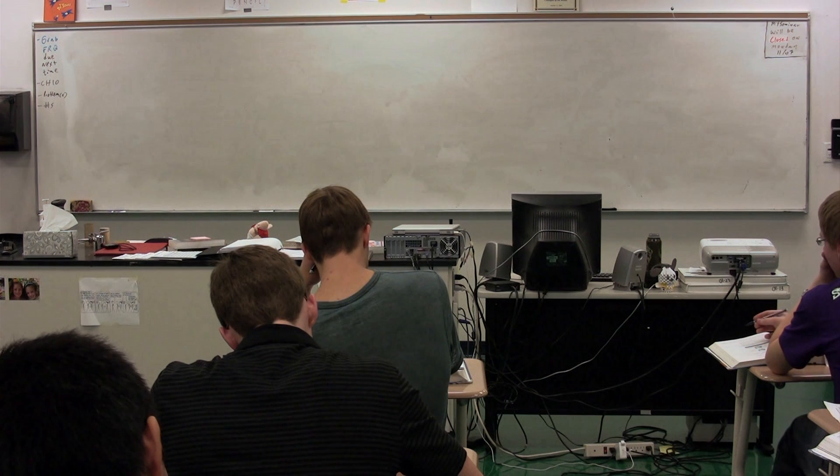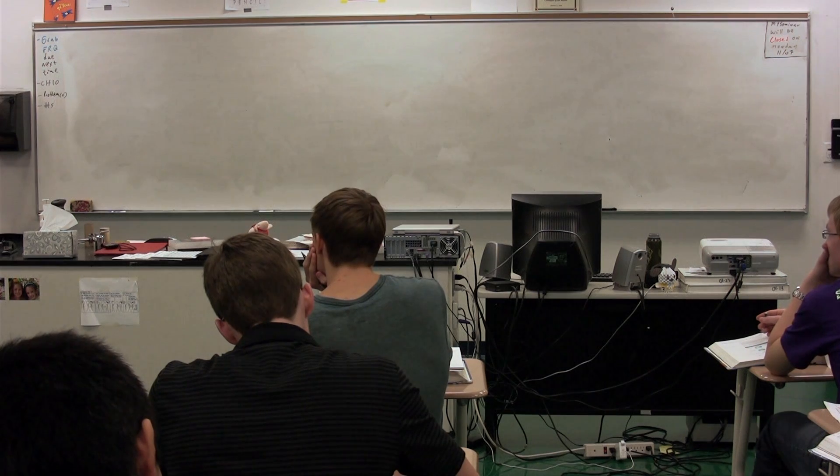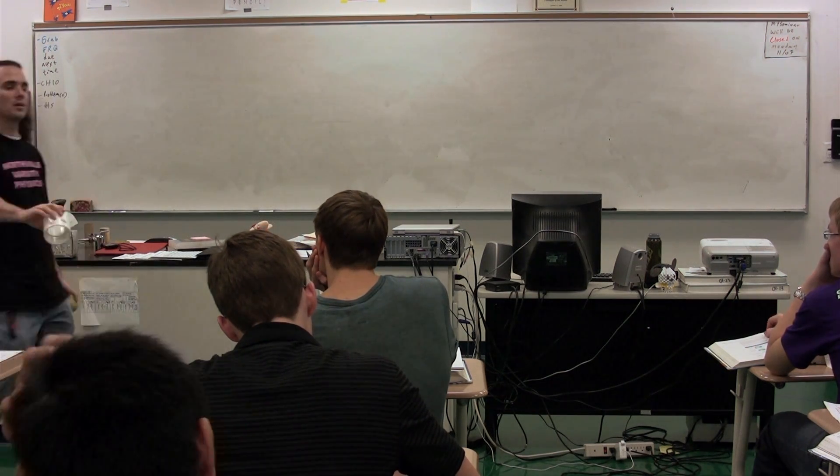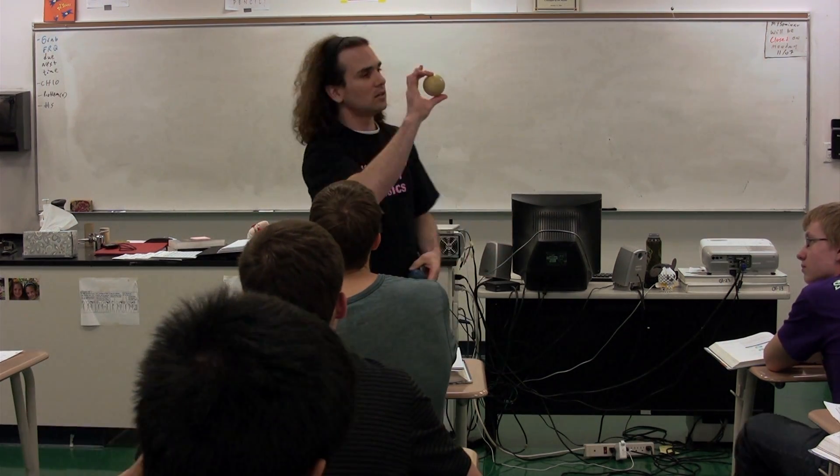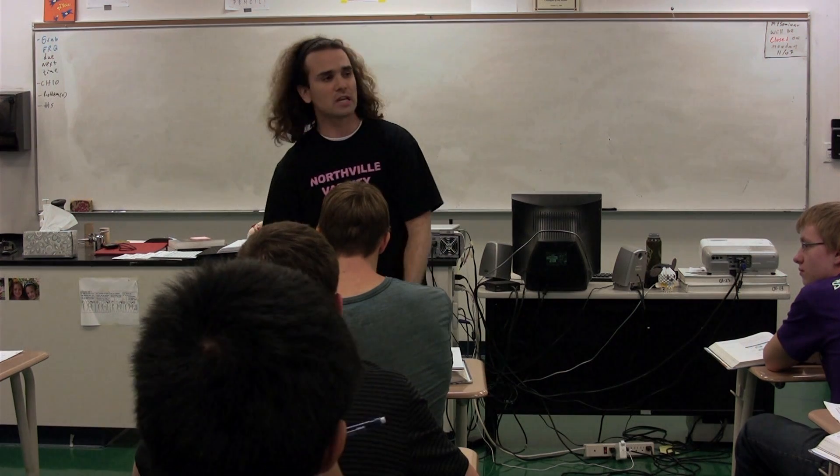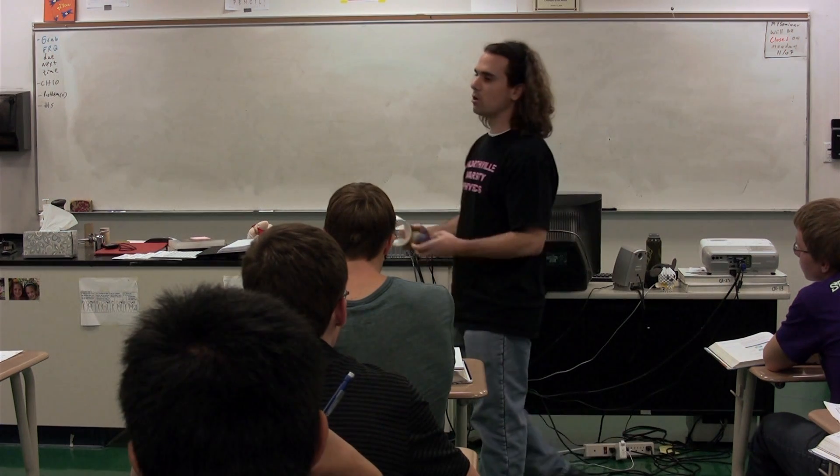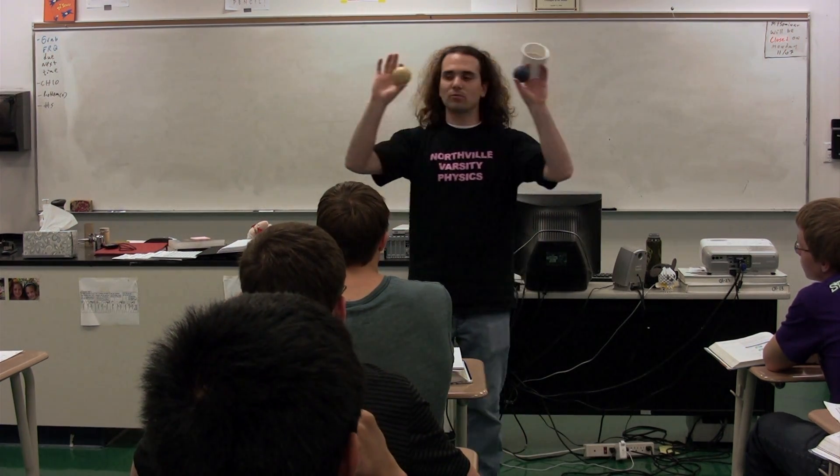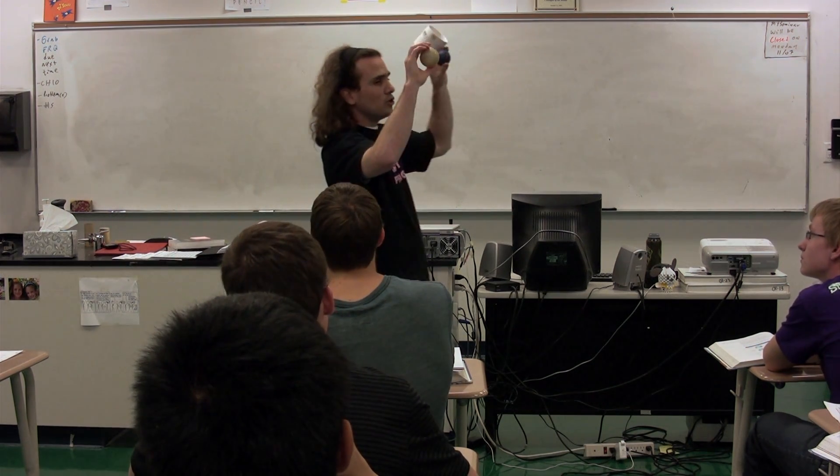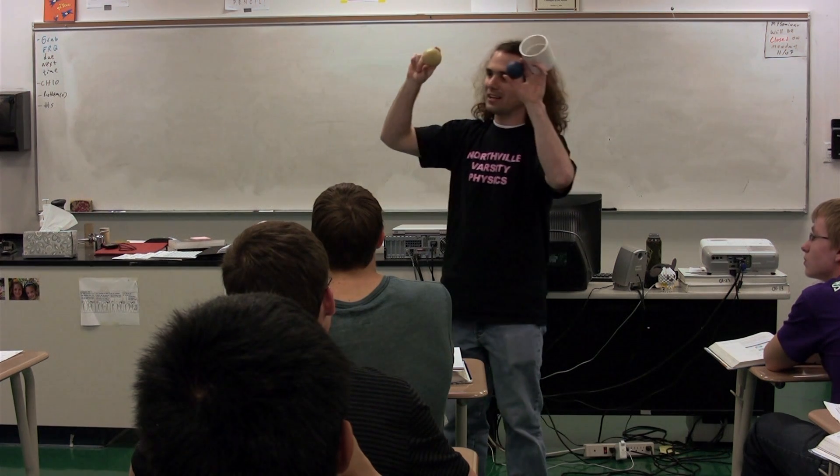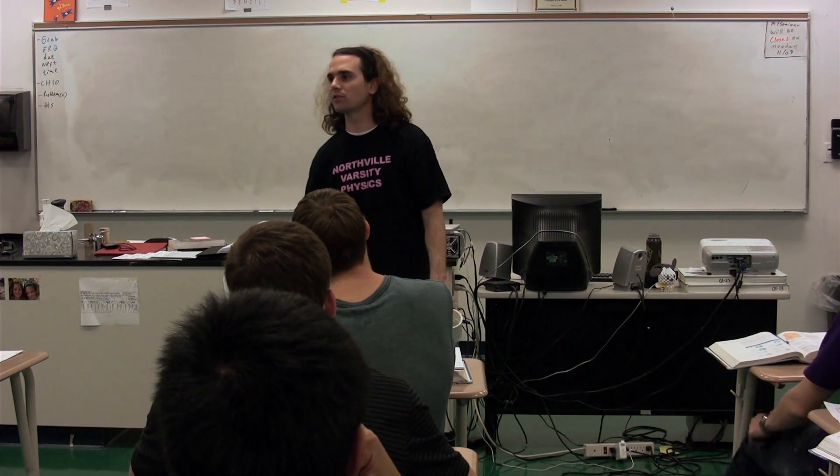One thing I did say is that you should be able to compare different objects to one another. For example, we have a thin hoop, we have a solid sphere, and a hollow sphere. You should not have to look at the table to know which one has the largest moment of inertia. You can tell me how, without looking at the table, without even knowing what the equations are, which one has the greatest moment of inertia?